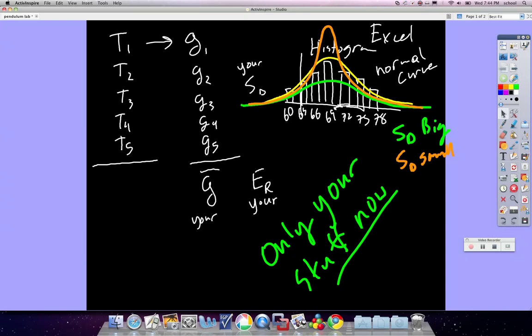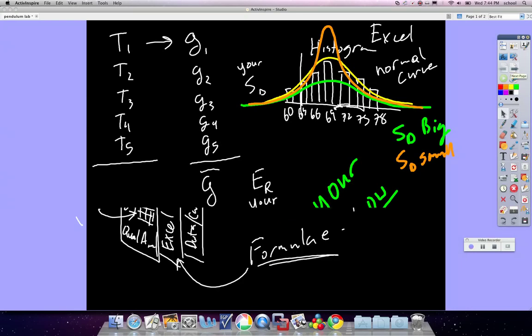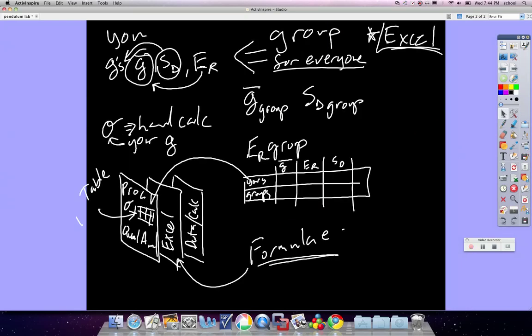Just disregard this stuff over here. Just like you did gravities and average gravity and standard deviations and relative error, you need to do that for all the rest of the data in your group.